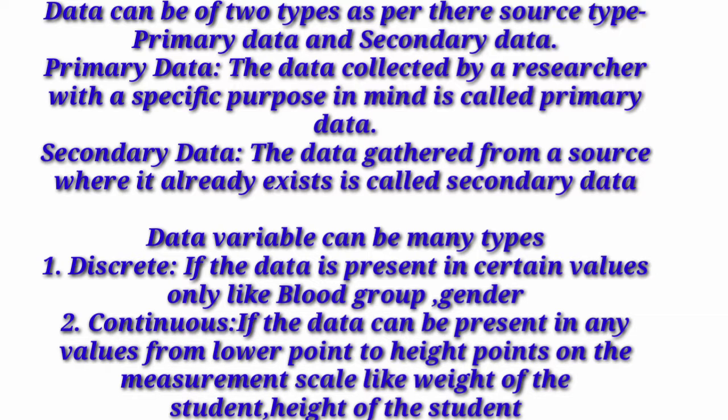Data variables can be of many types. Discrete data: if the data is present in certain values only, like blood group and gender. Continuous data: if the data can be presented in any value from the lowest point to the highest point on the measurement scale, like weight of students or height of students — this is known as continuous data.